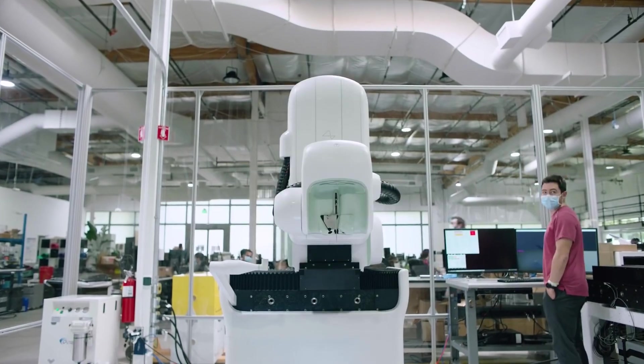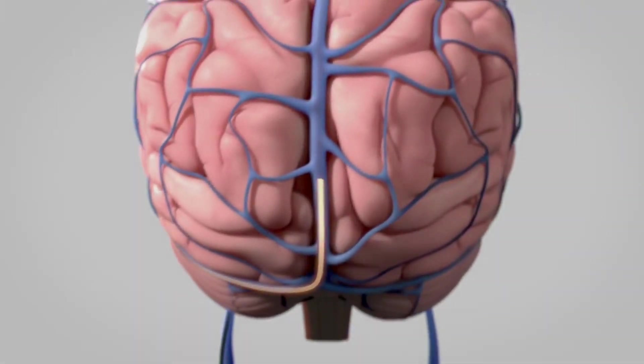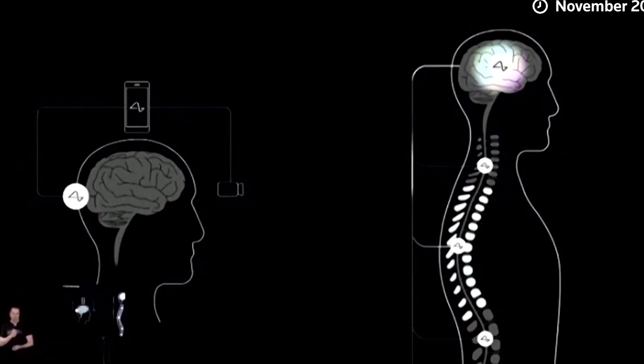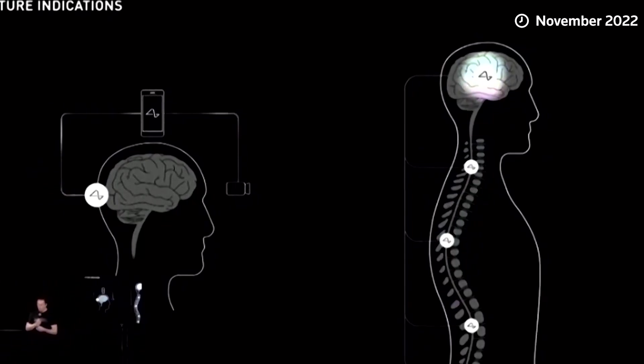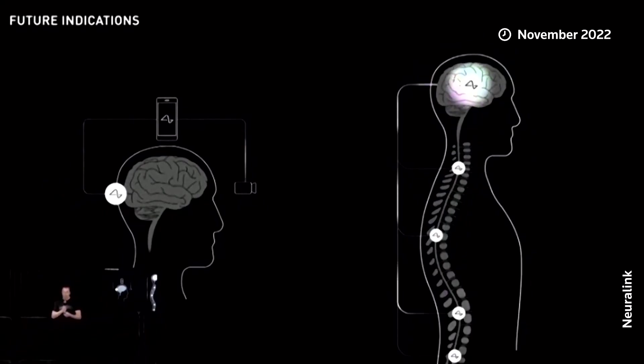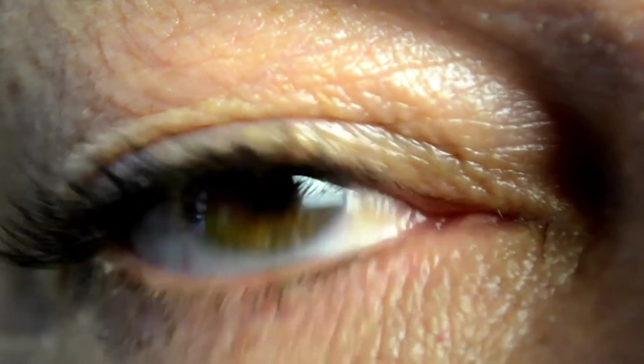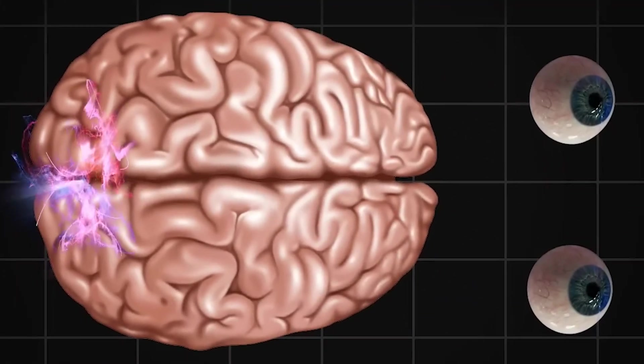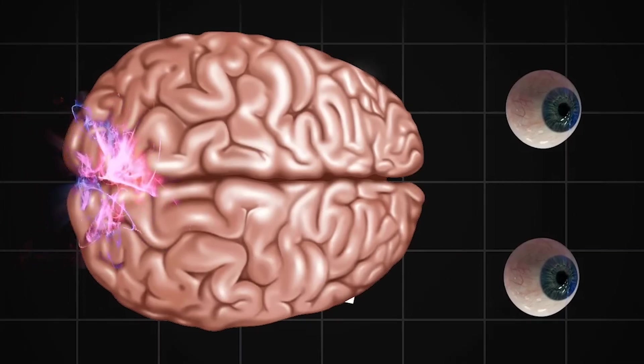The final step is stimulation. The Link's electrodes deliver carefully calibrated electrical impulses to neurons in the visual cortex. These impulses are designed to mimic the patterns of activity that would normally be produced by visual input from the eyes. As a result, the brain interprets these signals as visual perceptions, creating the sensation of sight.